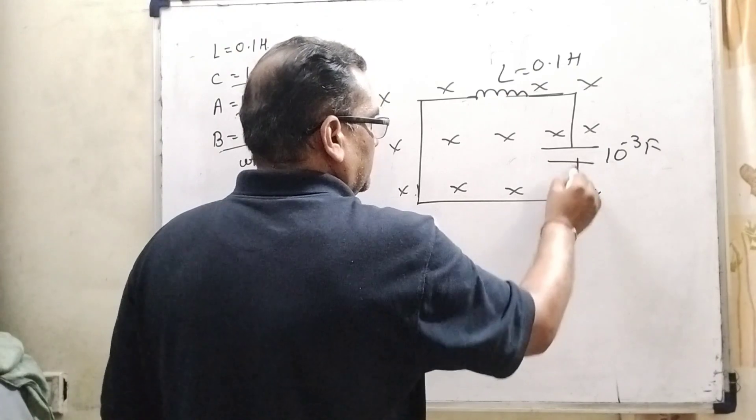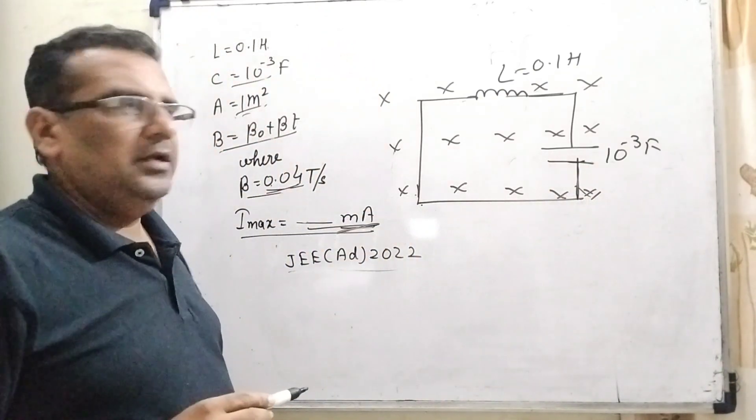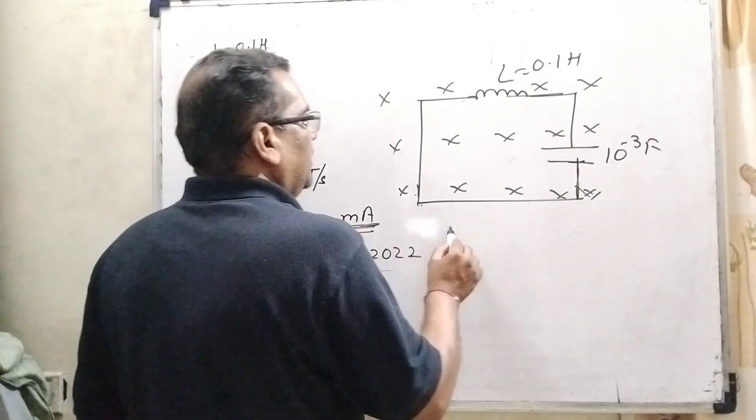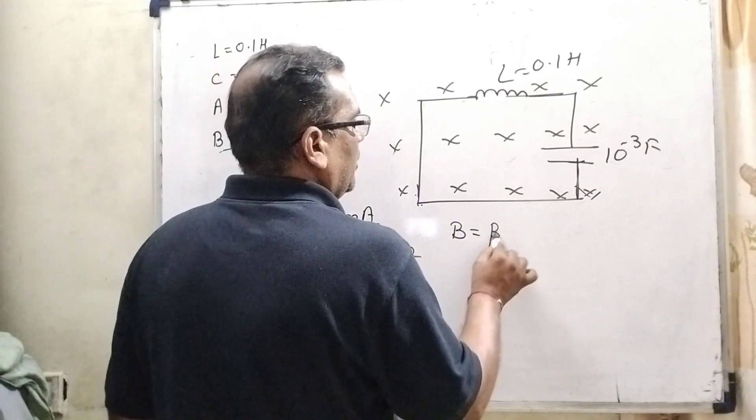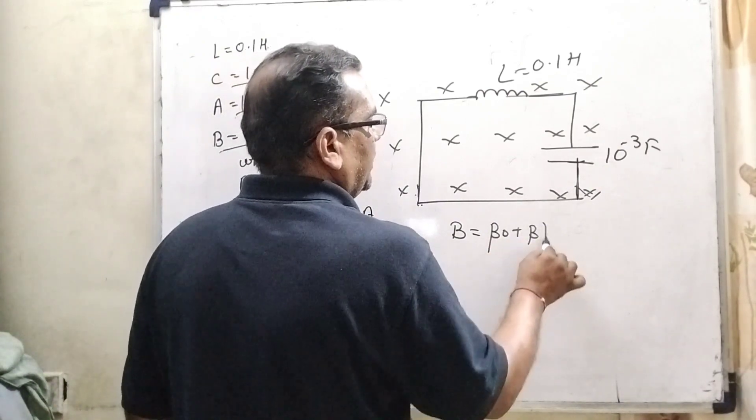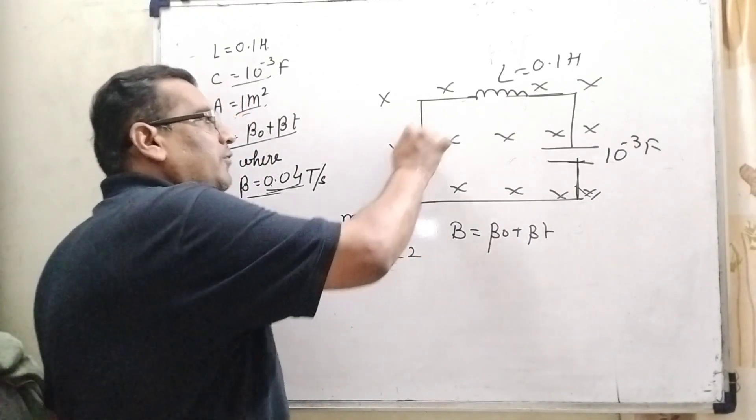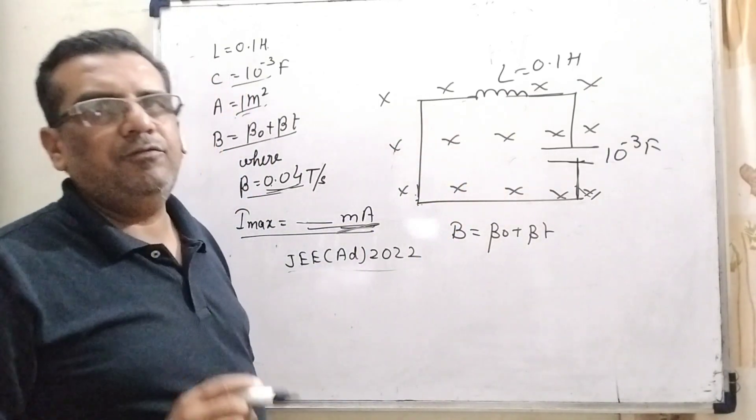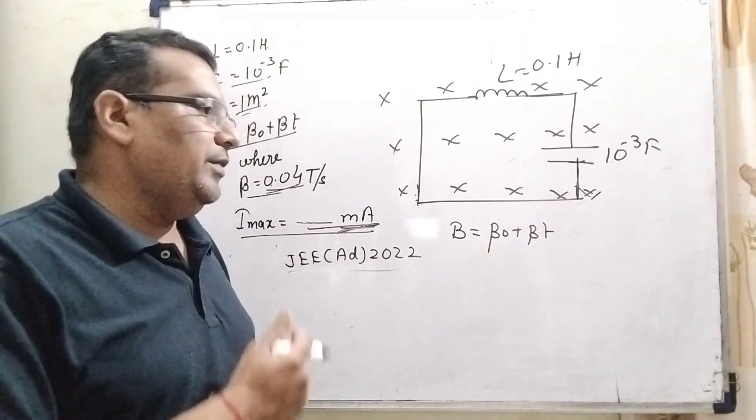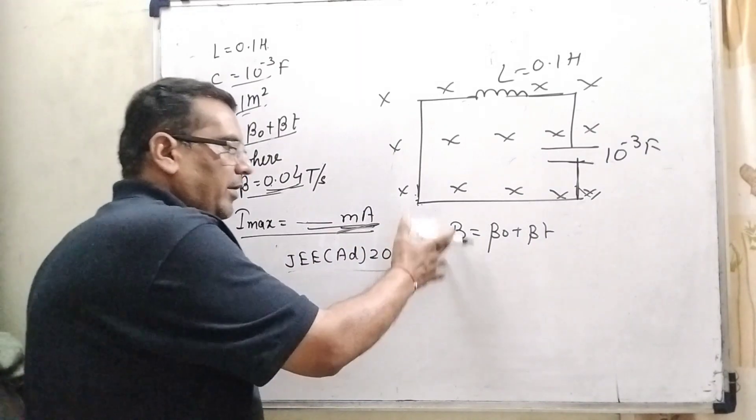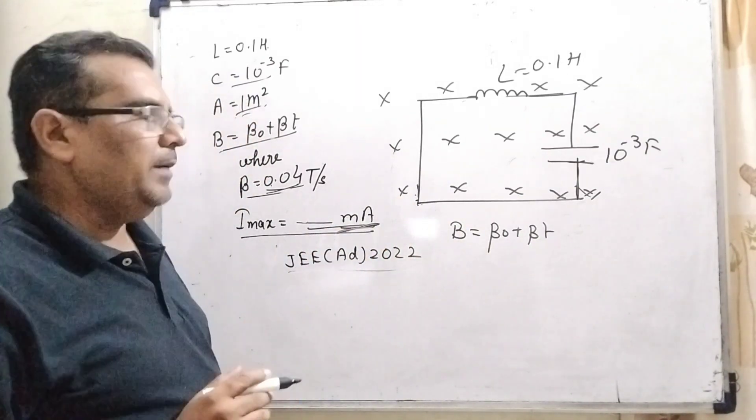Therefore, here due to this induced EMF is generated. And here the magnetic field is given that in the formula B equal to B0 plus beta into t. Due to this induced EMF, the current flows in the circuit and we have to find out the maximum amount of current. Let us first find out the induced EMF and then current.